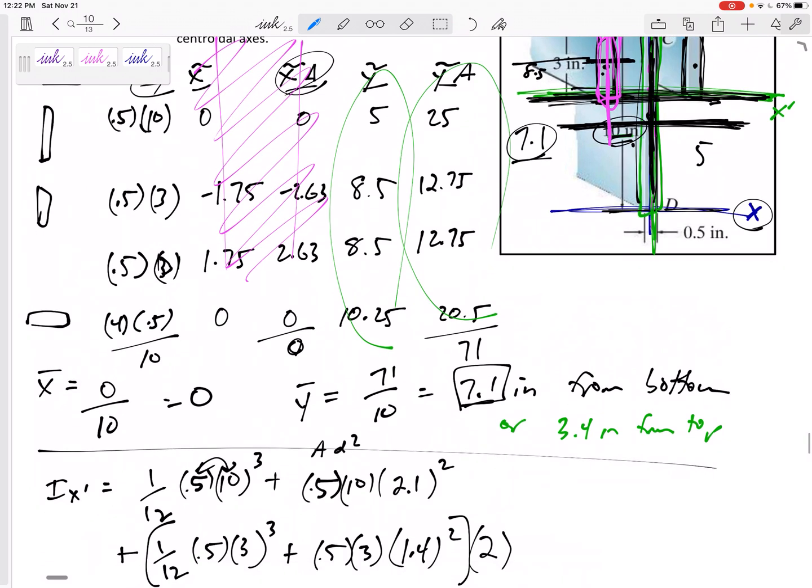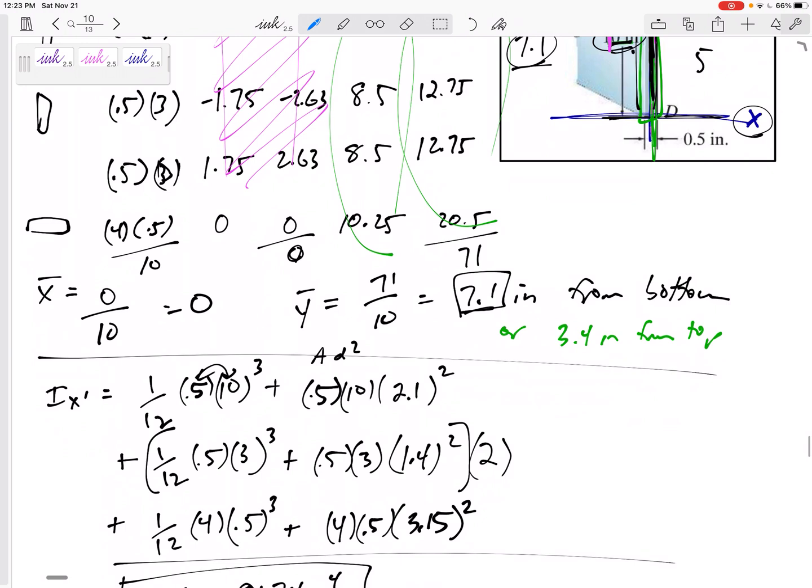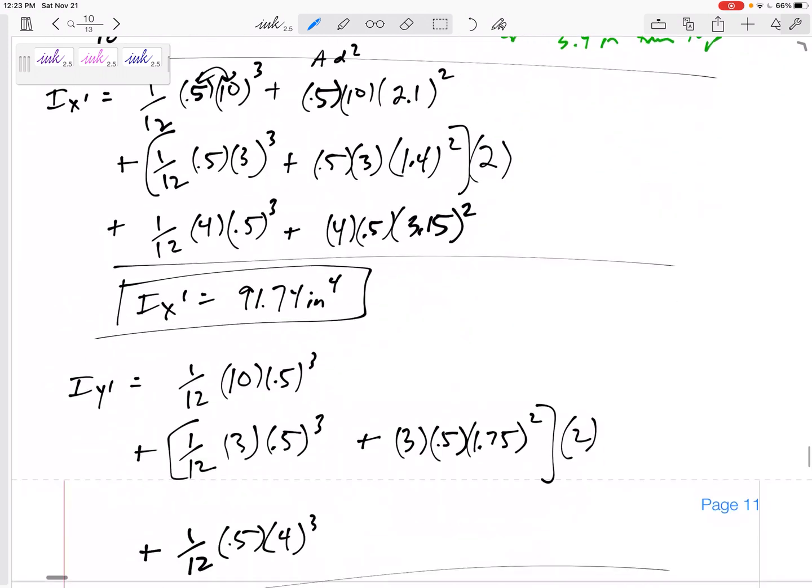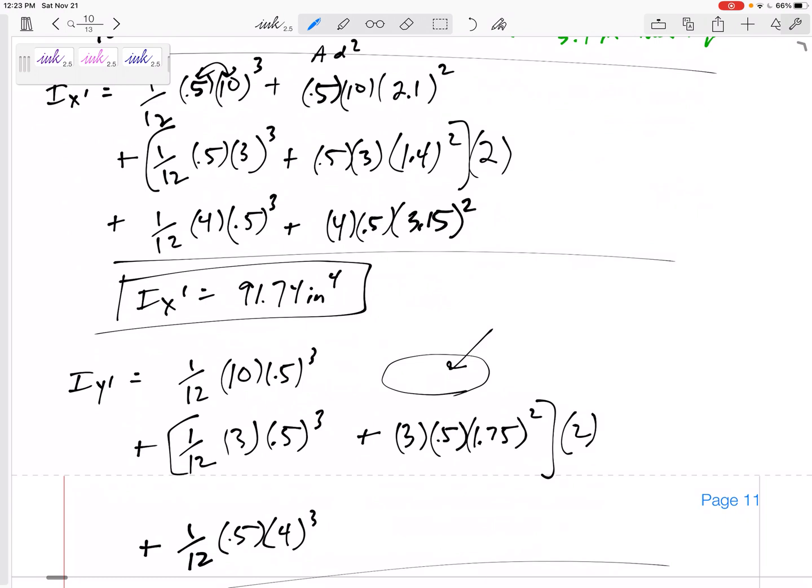To find the I, you just add up all the I's of each shape. If you've got a shape that's cut out, you subtract that I for that shape. So add up all the I's: I plus Ad squared, I plus Ad squared, I plus Ad squared. Some of them may not have an Ad squared, right? If the centroid of that shape is at the centroidal axes, then like these two, you might not have an Ad squared, and that's okay.